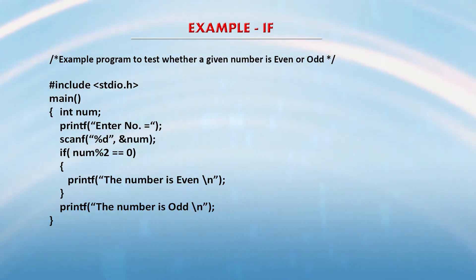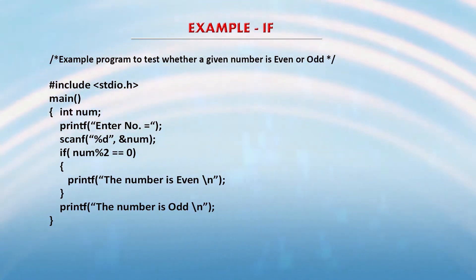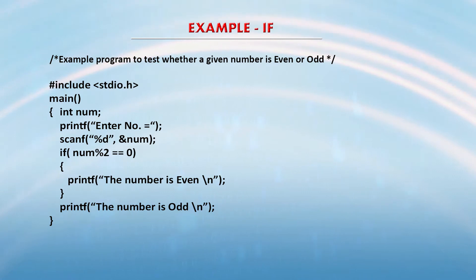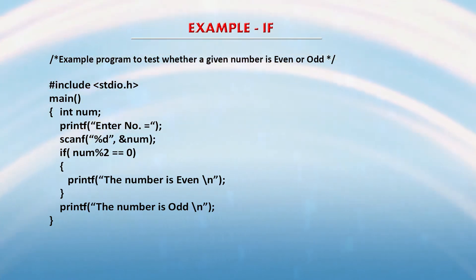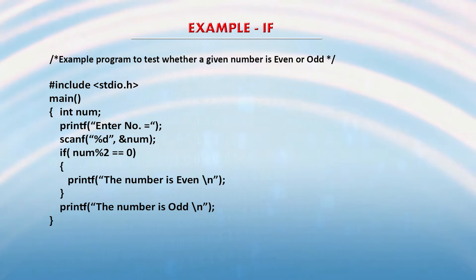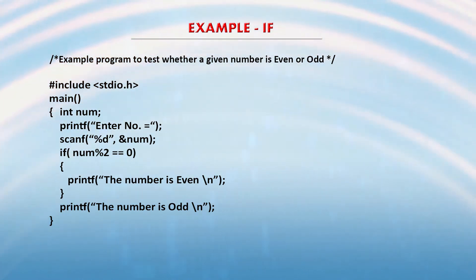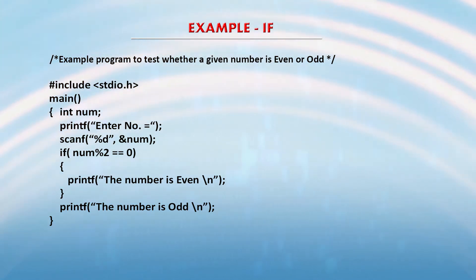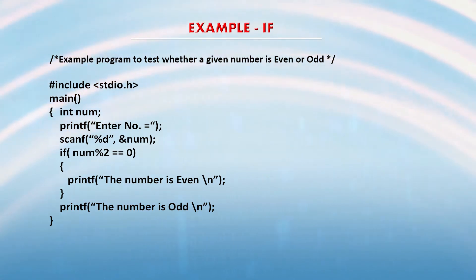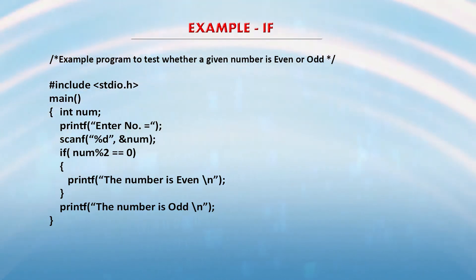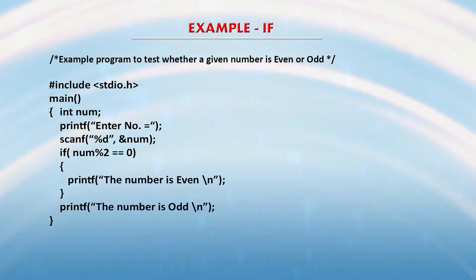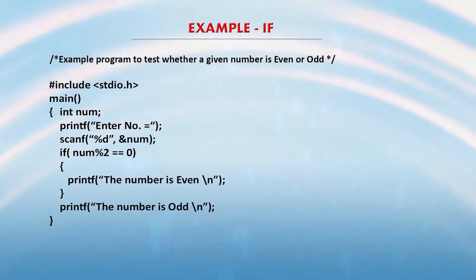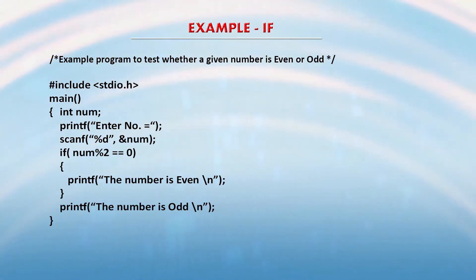If you want to know more about what different functions and features are associated with stdio.h — when you are writing the program in Turbo C — you just select stdio.h and press Control+F1, then the help for stdio.h will be activated. The same facility can be used for any function you want to learn about; for example, select scanf and press Control+F1 in the Turbo C environment. The program body starts with the main function within the opening and closing curly braces.